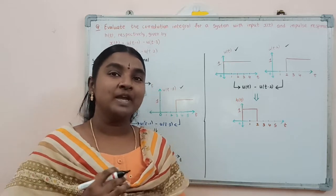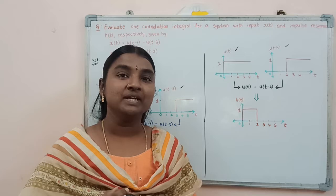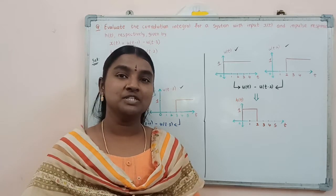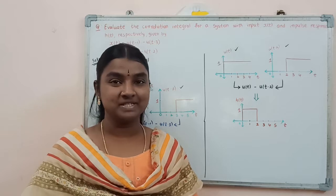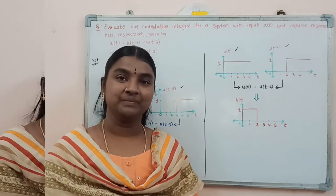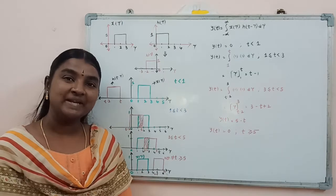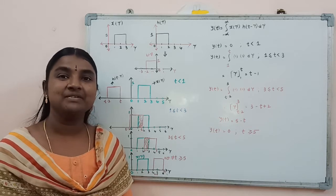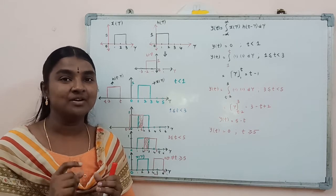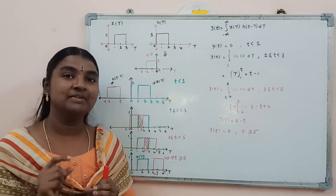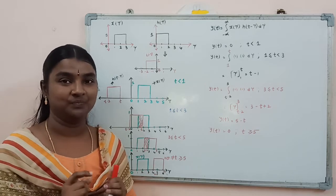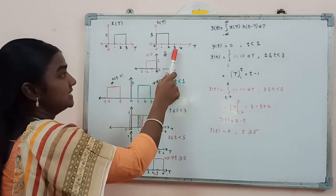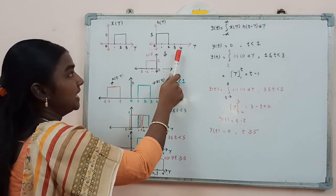Now we are going to consider the graphical convolution procedure steps one by one. Using those steps, we are going to find the output signal y(t). The first step is to express x(t) and h(t) with the independent variable tau, giving us x(τ) and h(τ).